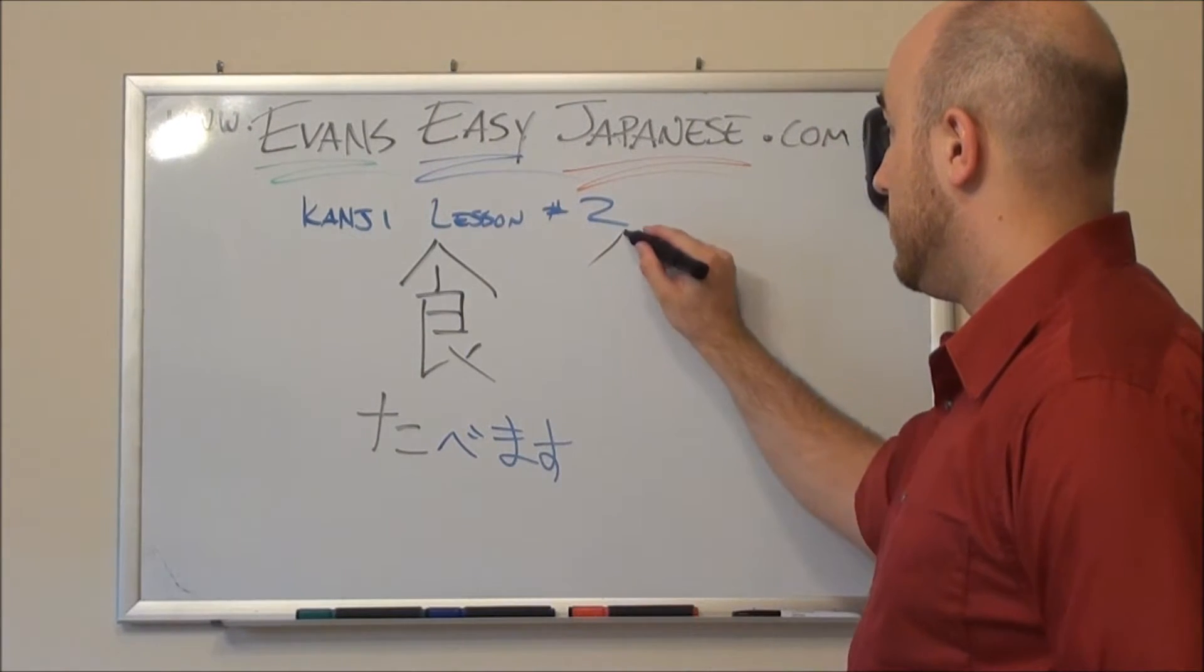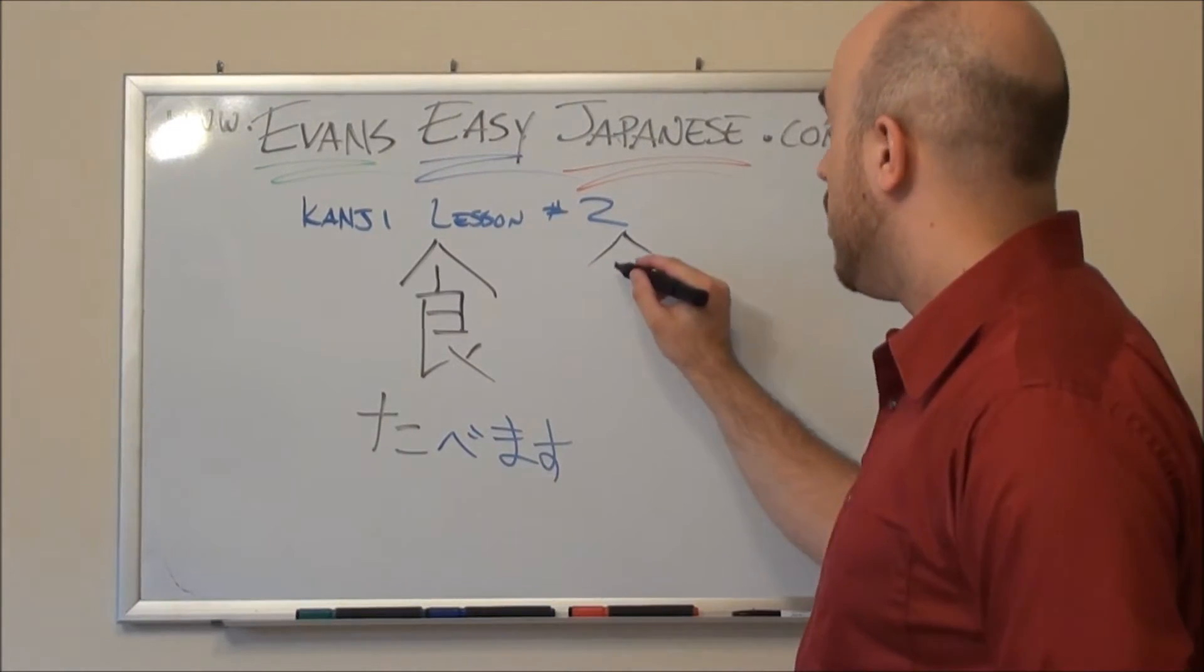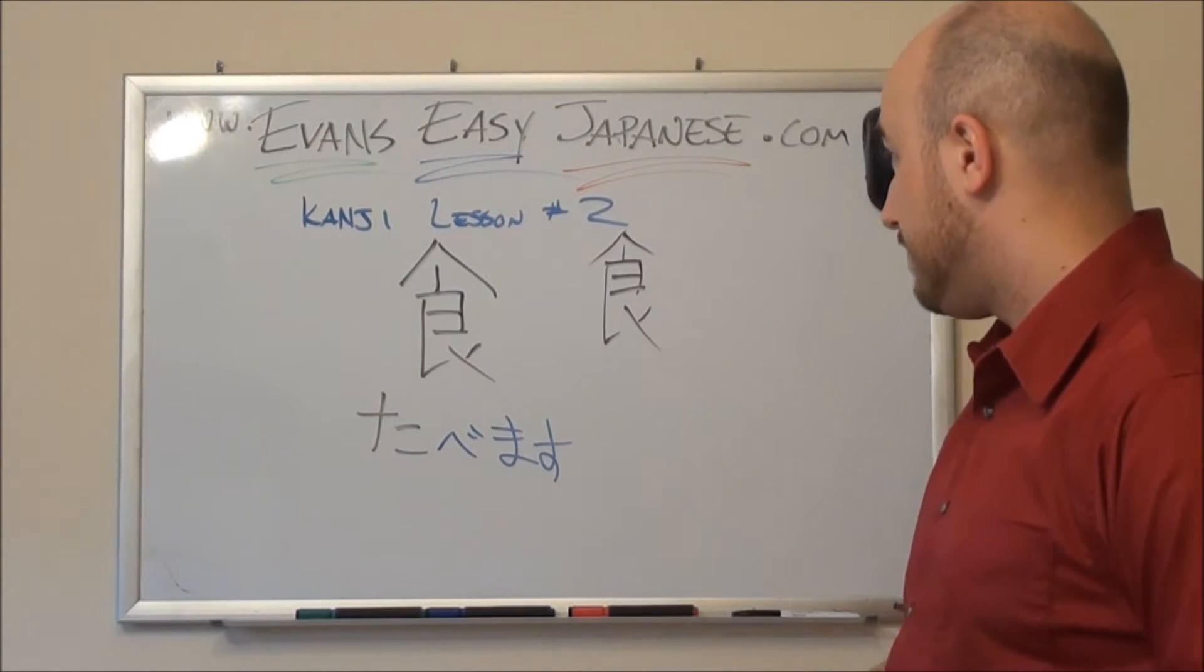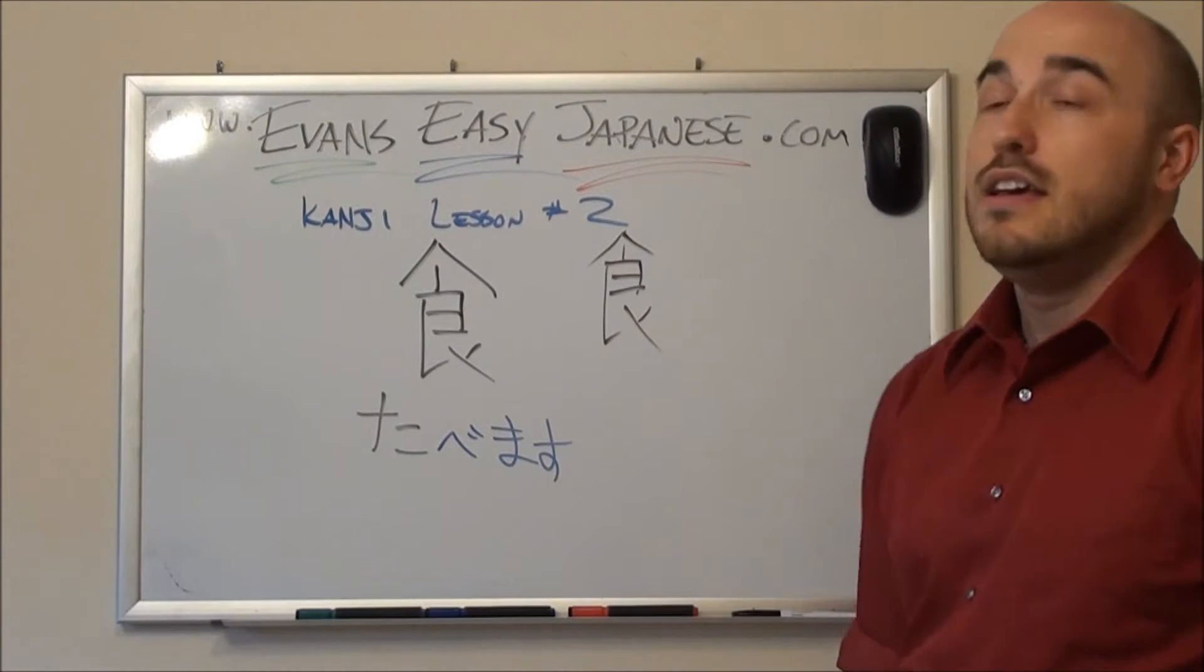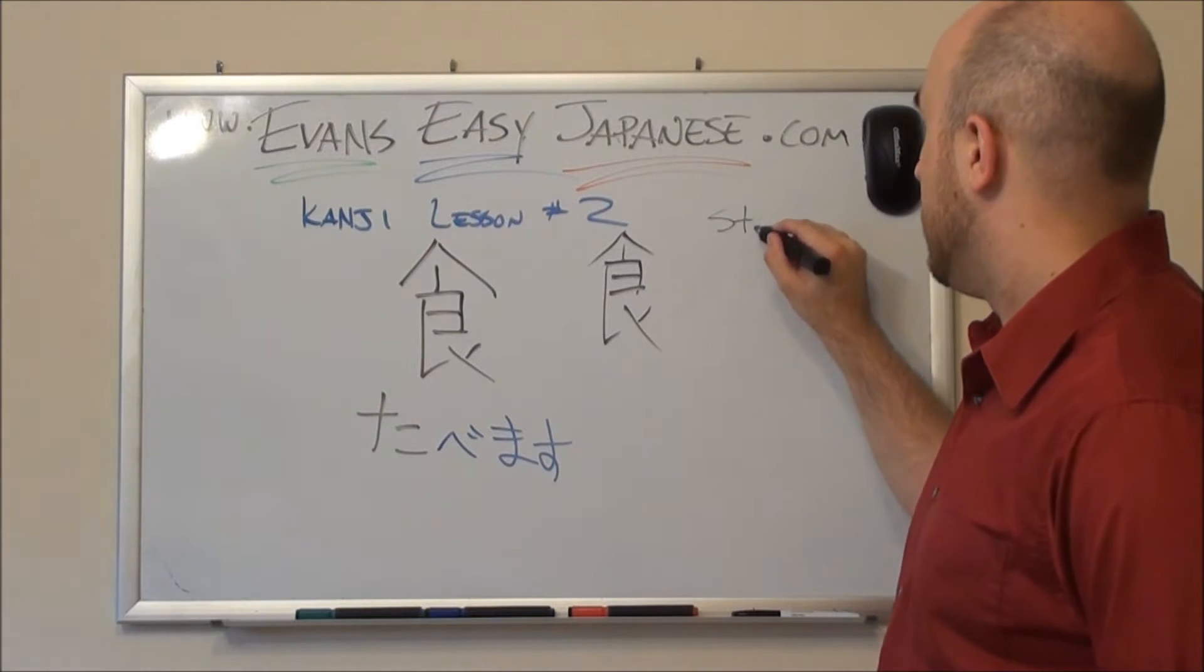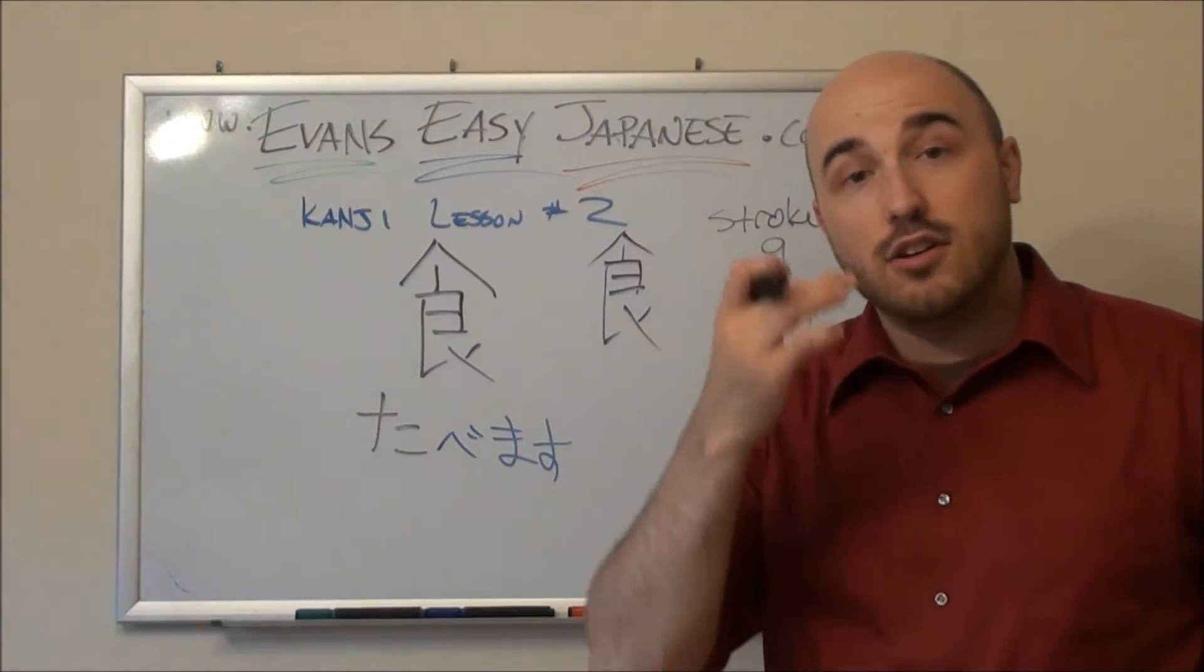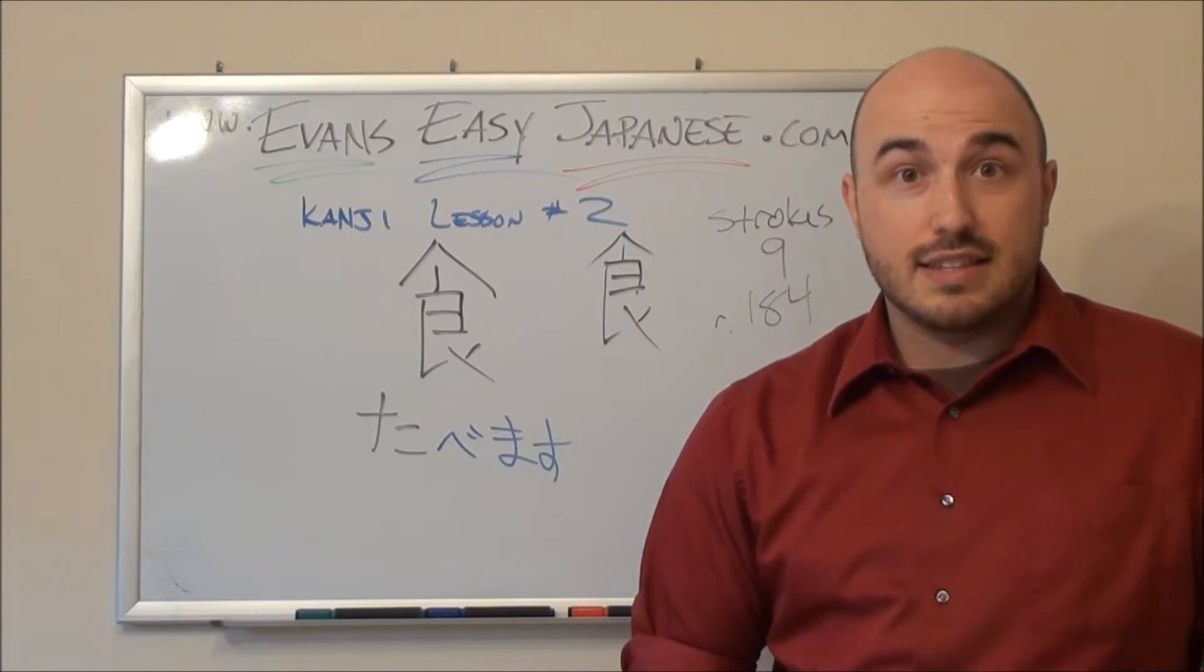One, two. I'm drawing at a weird angle. Apologize my hideousness. One, two, three, four, five, six, seven. Bring that hook. Eight, nine. One, two, three, four, five, six, seven, eight, nine. This is an important kanji. It is its own radical. It has nine strokes. And it is radical number 184. If you don't know what radicals are, right now it's not important. It will be in the future. We're going to discuss it at the end of the video.